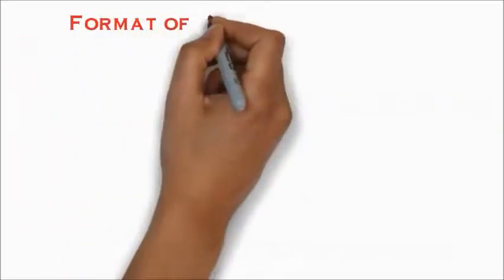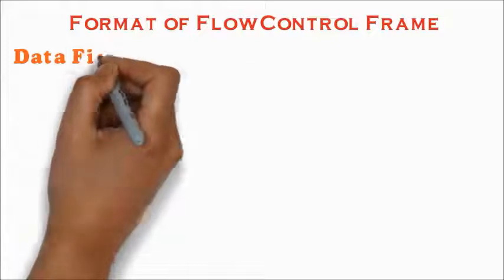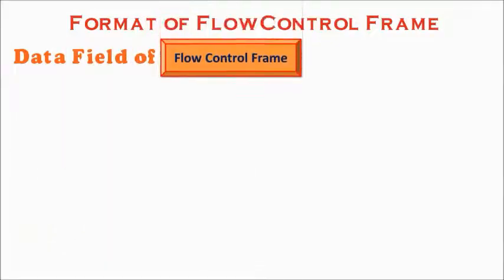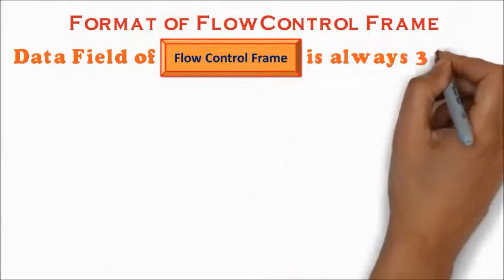Let us understand the format of flow control frame. If you consider the data field part of a flow control frame, it's always 3 bytes.